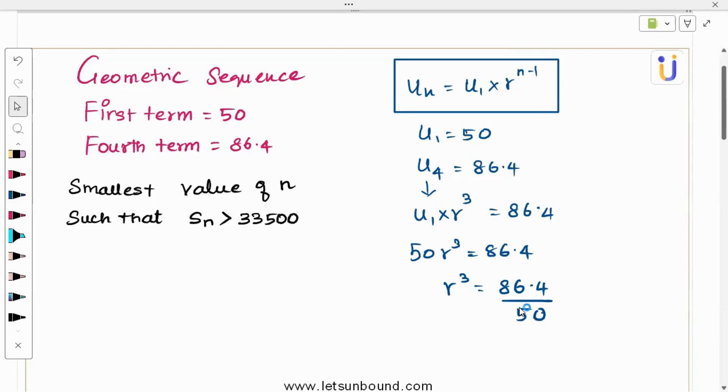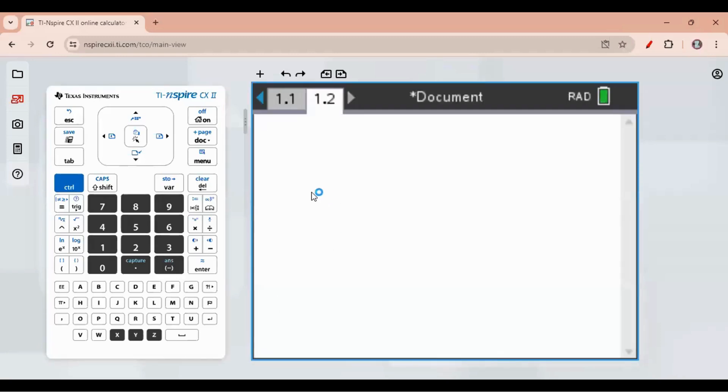After finding r, we will go with this inequality and solve it. Then we will find n will be an inequality and we need to fetch one smallest value out of it. So that simple. Now we are going to solve for r. We have the final equation that is r cube equals...